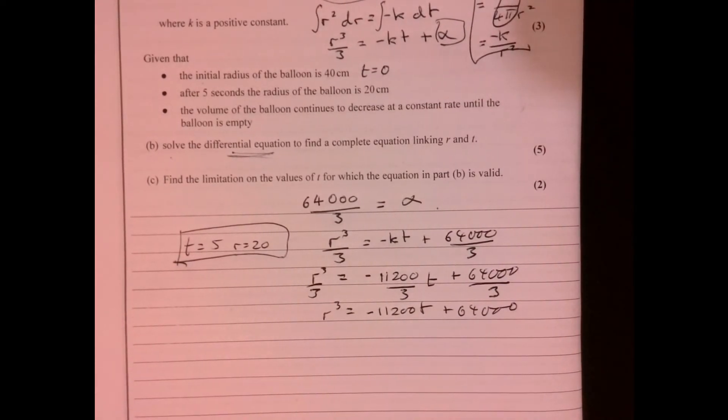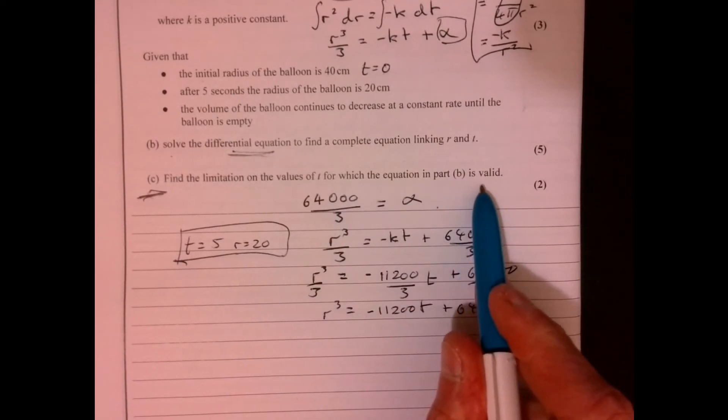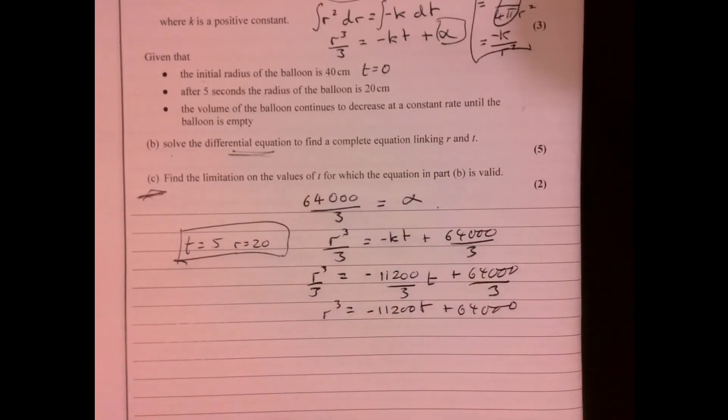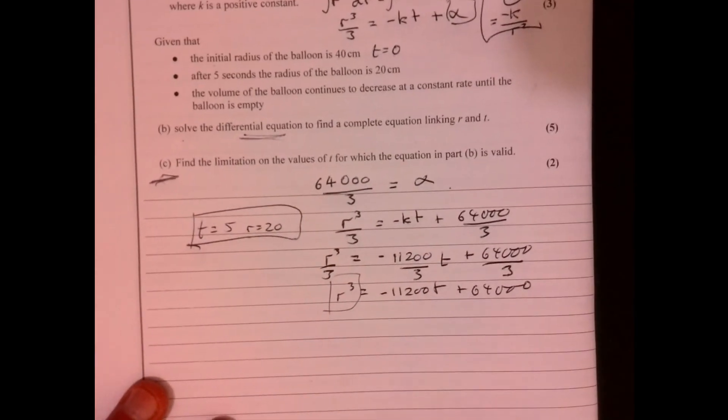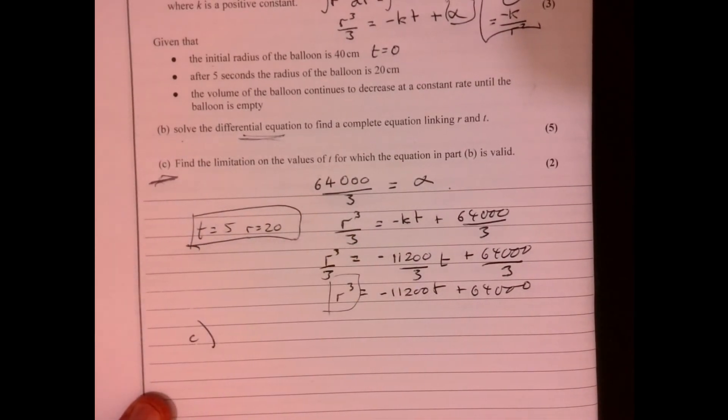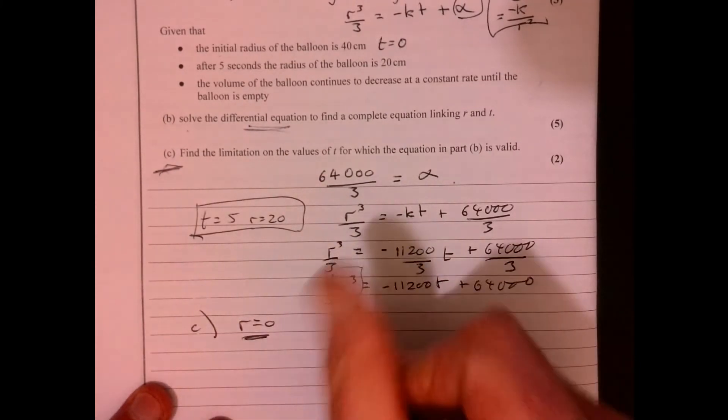Now, the last little step on part C talks about finding the limitation on the values of t for when it's going to be valid. Well, what's going to happen? At some point, the radius is going to be 0. So all you've got to do on part C is just say, when's r going to be 0?